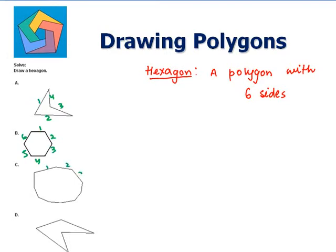1, 2, 3, 4, 5, 6, 7, 8, 9, 10. Not a hexagon. 1, 2, 3, 4, 5. Five sides. Not a hexagon. So our only answer is option B, which has six sides. That's a hexagon.